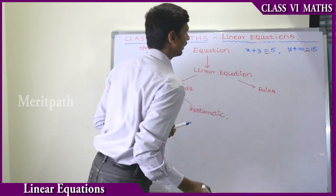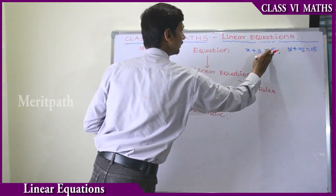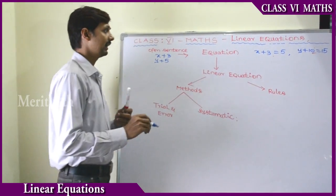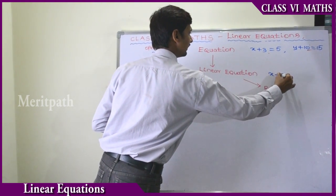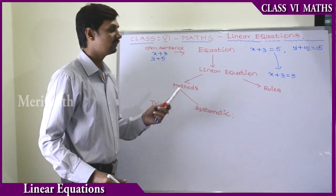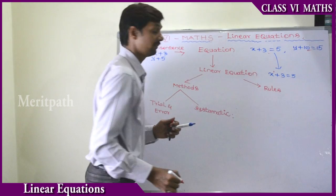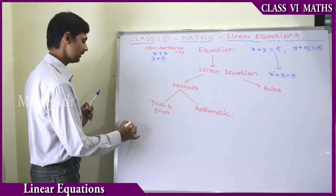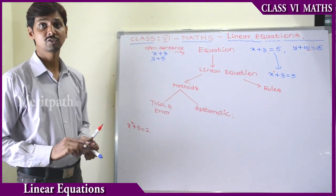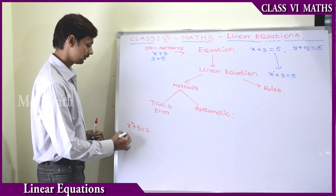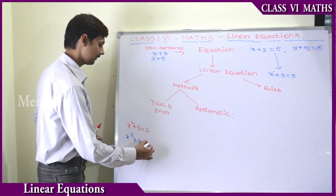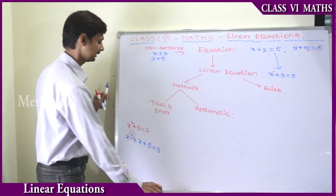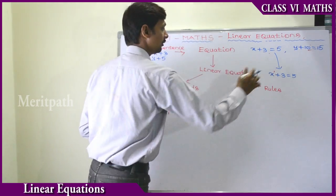Now let's see what a linear equation is. If the highest degree of the variable in the equation is 1, then we call it a linear equation. For example, x plus 3 equals 5 — the highest degree of the variable x is 1, so this is a linear equation. However, x squared plus 5 equals 2 is not a linear equation because the highest degree is 2. And x cubed plus x plus 5 equals 3 is not a linear equation because the highest degree is 3. If the highest degree of the variable is 1, then we call it a linear equation.